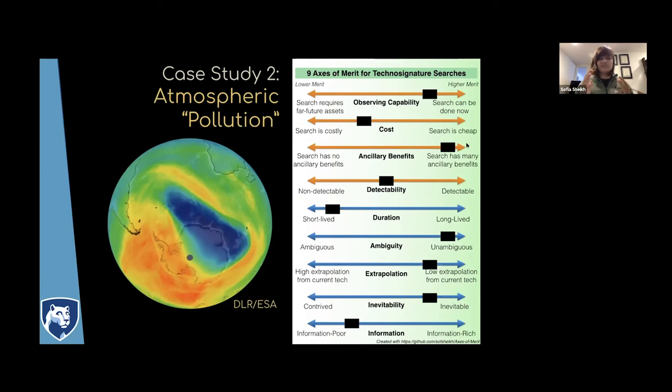But these are observations that we want to take for other astrophysics anyway. We're curious about the atmospheres of terrestrial exoplanets—we want to characterize them, look for biosignatures, understand geological processes. So these are searches that are probably going to be done anyway. If you want, you can adjust those sliders to say the cost is cheap if you wait for someone else to take the data. As far as detectability goes, it's on the edge of our capabilities right now. But if you pump up the amount of these gases in the atmosphere, you can make it detectable by, say, JWST for a handful of nearby exoplanets.